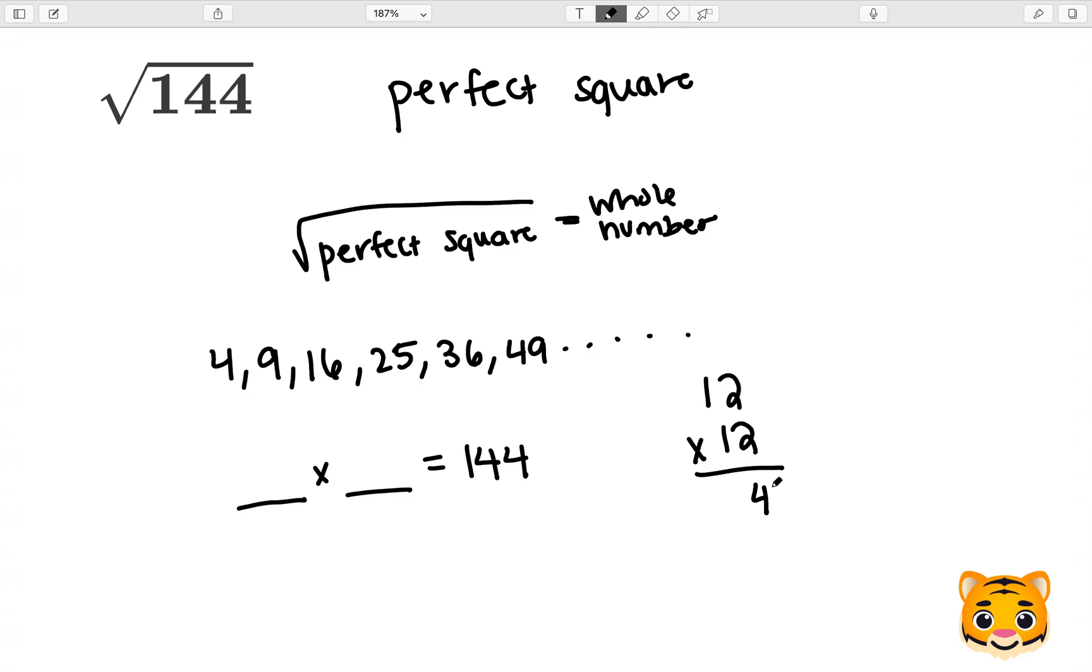2 times 2 gives us 4. 1 times 2 gives us 2. We add that 0 as our placeholder and we do 1 times 2 which is 2 and 1 times 1 which is 1. As you can see, 12 times 12 gives us 144. So the square root of 144 is therefore 12.